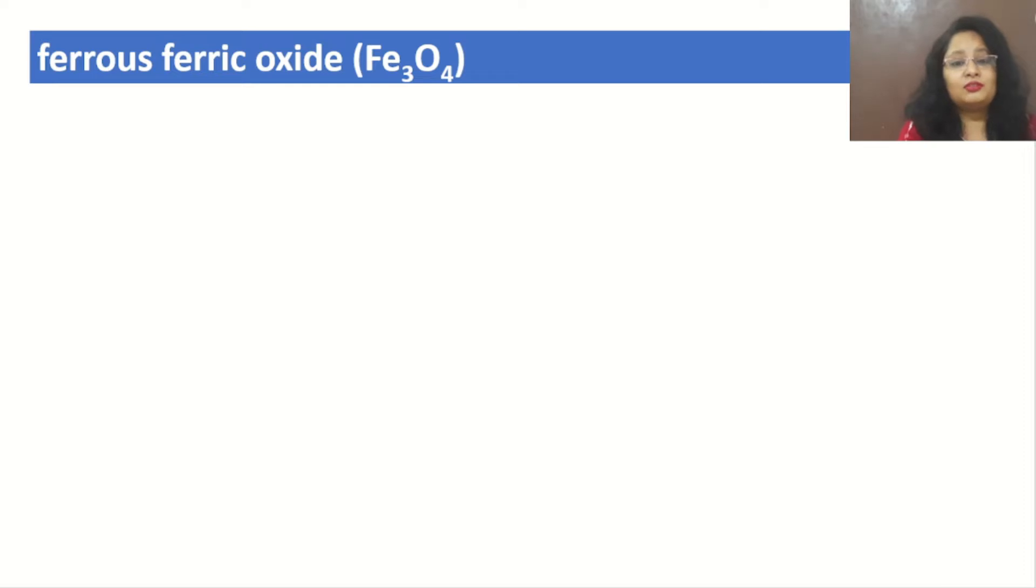The structure of Fe₃O₄ is something like oxygen in the center, then Fe and Fe, oxygen like this, and then oxygen, Fe, oxygen. See carefully - 3 Fe and 4 oxygen. So this is the exact structure of Fe₃O₄.